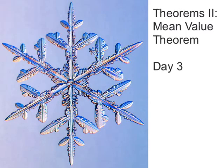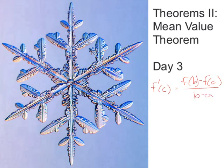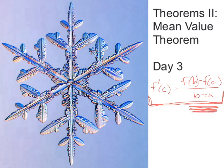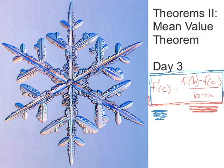Hopefully after watching this video you understand the mean value theorem a little bit better. The basic idea is that the derivative at some point c will be equal to the slope of the secant line somewhere between a and b. This is actually a pretty interesting idea that gets used in traffic: if police officers can predict that your average speed was speeding, then they know at some point in time you were actually speeding, even if they never saw you. There are toll bridges or toll highways that use this system to automatically ticket people who have a higher than speed limit average. Thanks for watching.